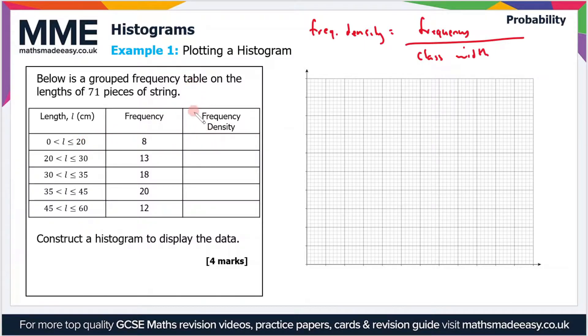For the first one, the frequency is 8 and the class width is 20, so the frequency density is 8 over 20, which is 0.4. The next one will be 13 divided by 10, which is 1.3, and so on. You should get values of 3.6, 2, and 0.8 for the rest of the table.